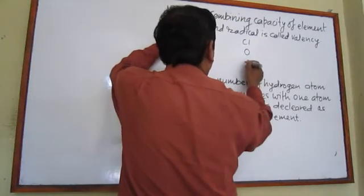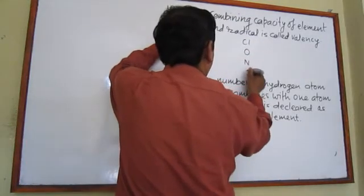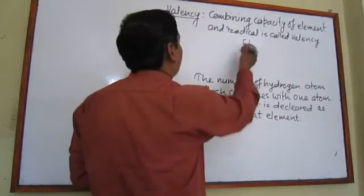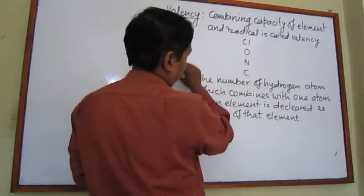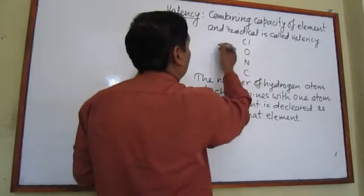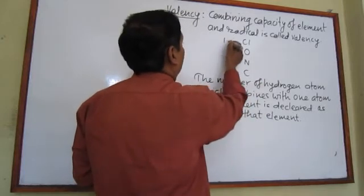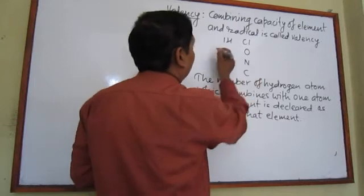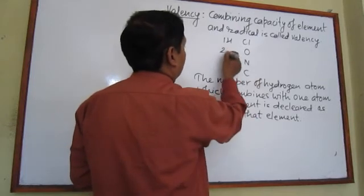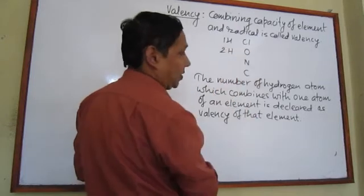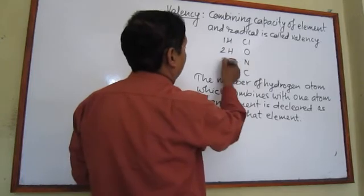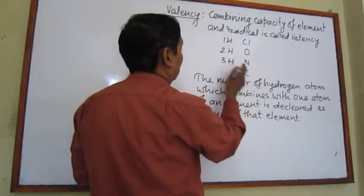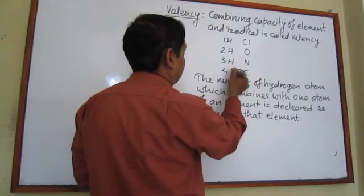Let's take four elements — chlorine, oxygen, nitrogen, and carbon — and combine each with hydrogen. One atom of chlorine combines with one atom of hydrogen. One atom of oxygen combines with two atoms of hydrogen. One atom of nitrogen combines with three atoms of hydrogen, and one atom of carbon combines with four atoms of hydrogen.